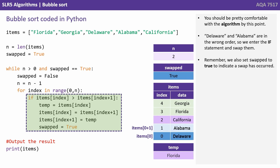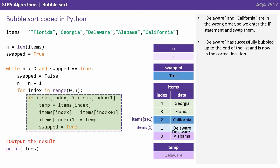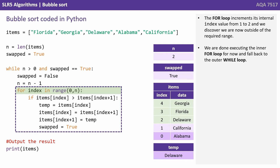Delaware and Alabama are in the wrong order, so we enter the if statement and swap them. Delaware has successfully bubbled up to the end of the list and is now in the correct location. The for loop increments its internal index from 1 to 2 and discovers we're outside of the required range. We are once again done executing the inner for loop and fall back to the outer while loop.